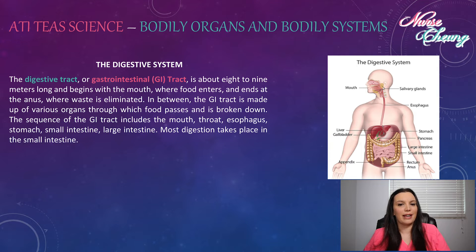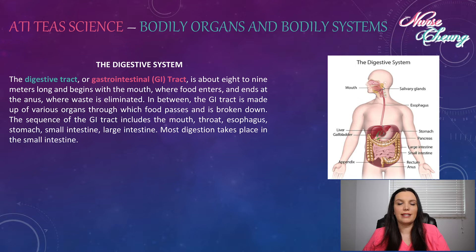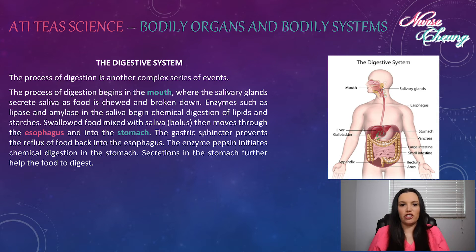The digestive system, or gastrointestinal tract, is about 8 to 9 meters long and begins with the mouth, where food enters, and ends at the anus, where waste is eliminated. In between, the GI tract is made up of various organs through which food passes and is broken down. The sequence of the GI tract includes the mouth, throat, esophagus, stomach, small intestine, and large intestine. Most digestion takes place in the small intestine.